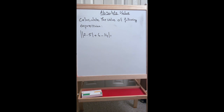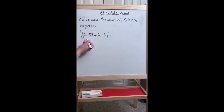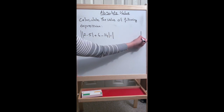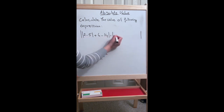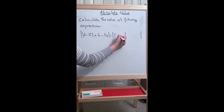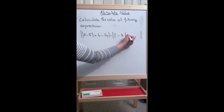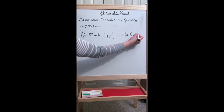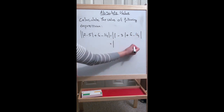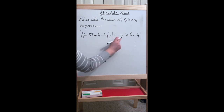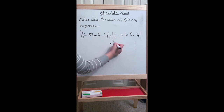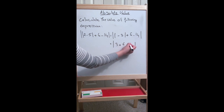Now we're going to move on to an exercise: calculate the value of the following expression. To solve this, we start with the innermost value first. We evaluate the absolute value of (2 minus 5), which is the absolute value of -3, plus 6 minus 14. Since -3 is negative, we write the opposite, which is 3, plus 6 minus 14.